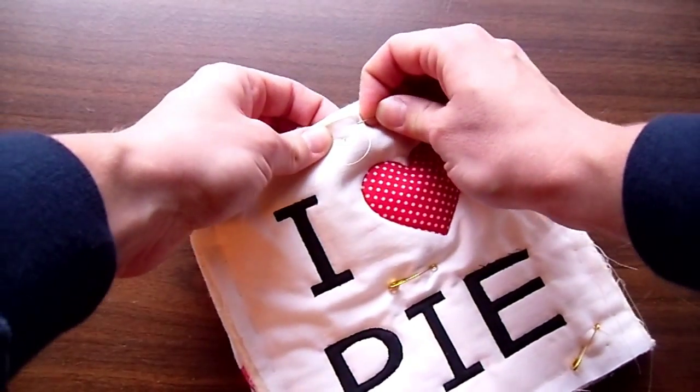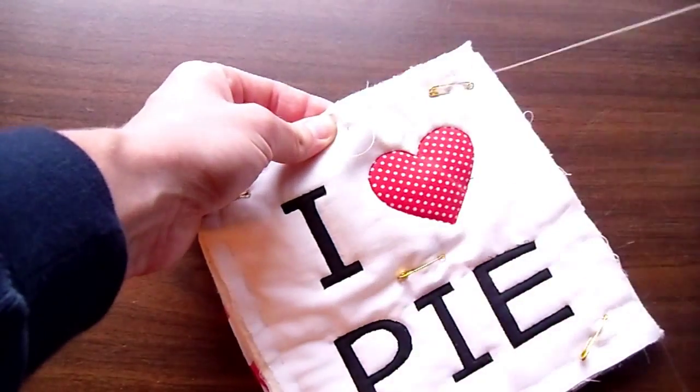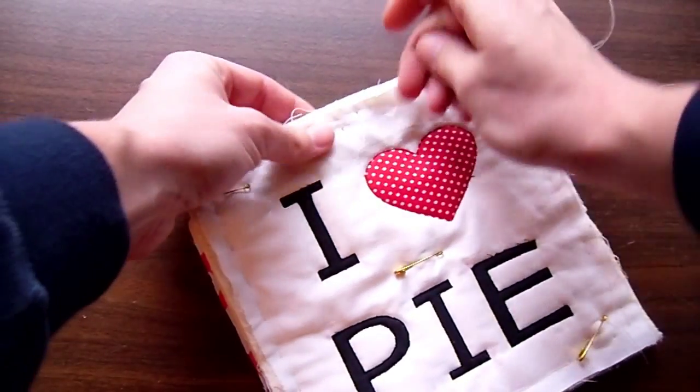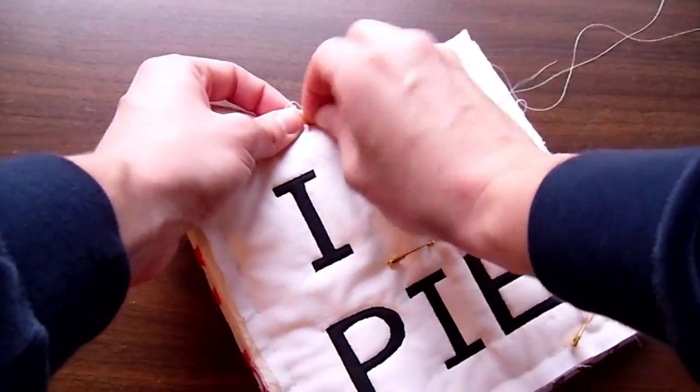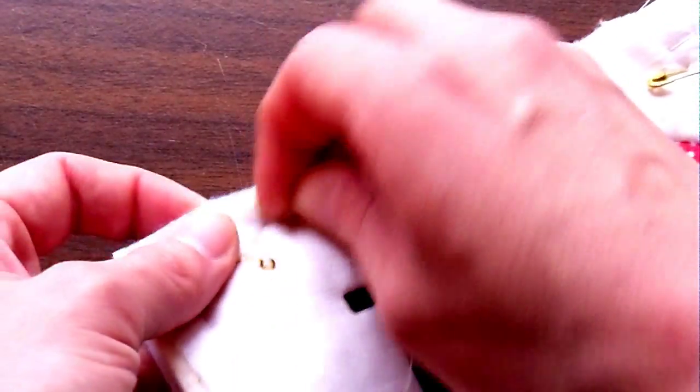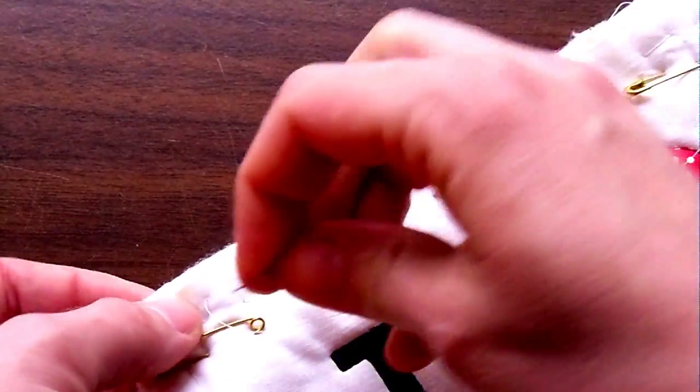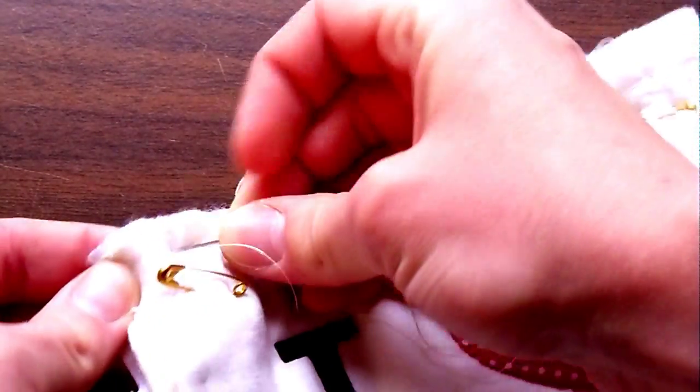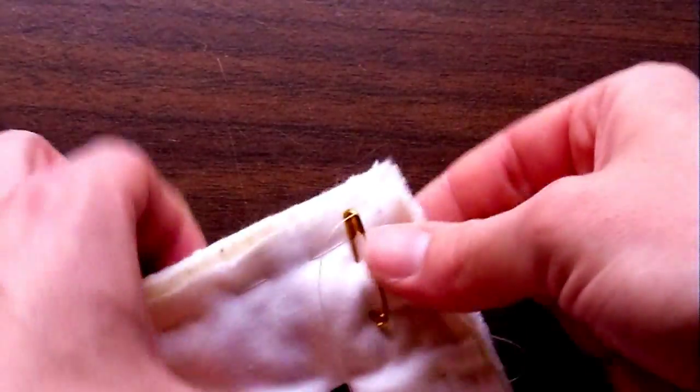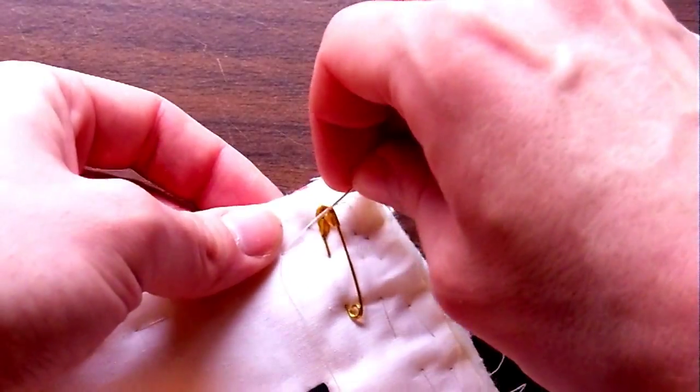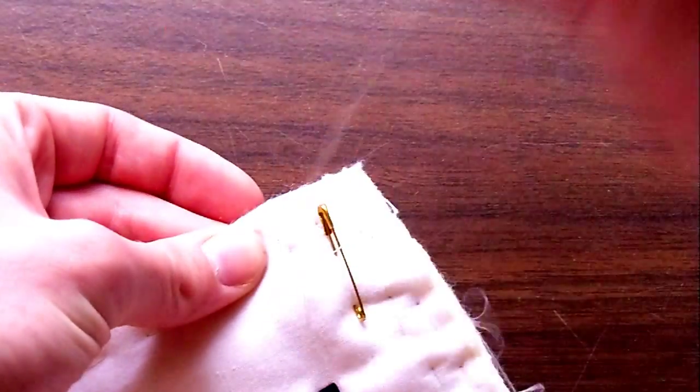Thread baste about a quarter inch around all edges. Once you're done, remove pins and the first line of basting stitches you did in the first video.